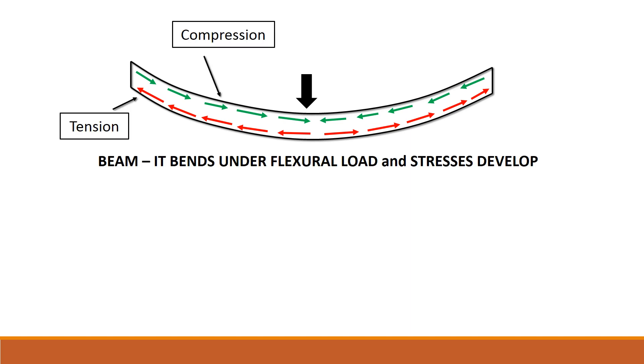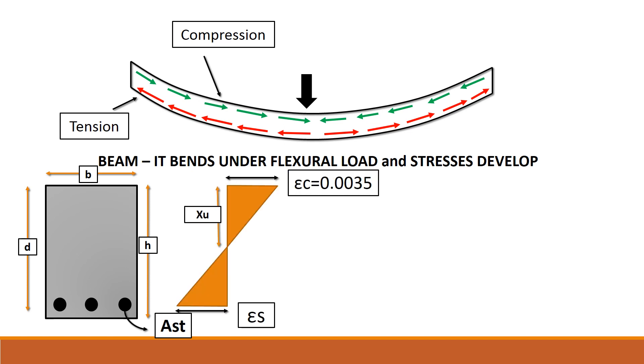An RCC beam undergoes tension and compression at the two extreme fibers under flexural loads. The concrete in beam section would be under compression strain, and the maximum compression strain at the extreme fiber due to flexure would be 0.0035 in concrete. The steel bars would be at a strain of epsilon s.